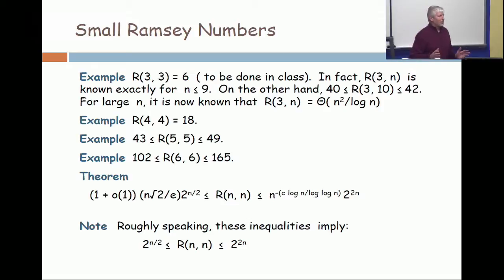So, this estimate is putting r(6,6) somewhere between 64 and 16 million. These are not very tight bounds.